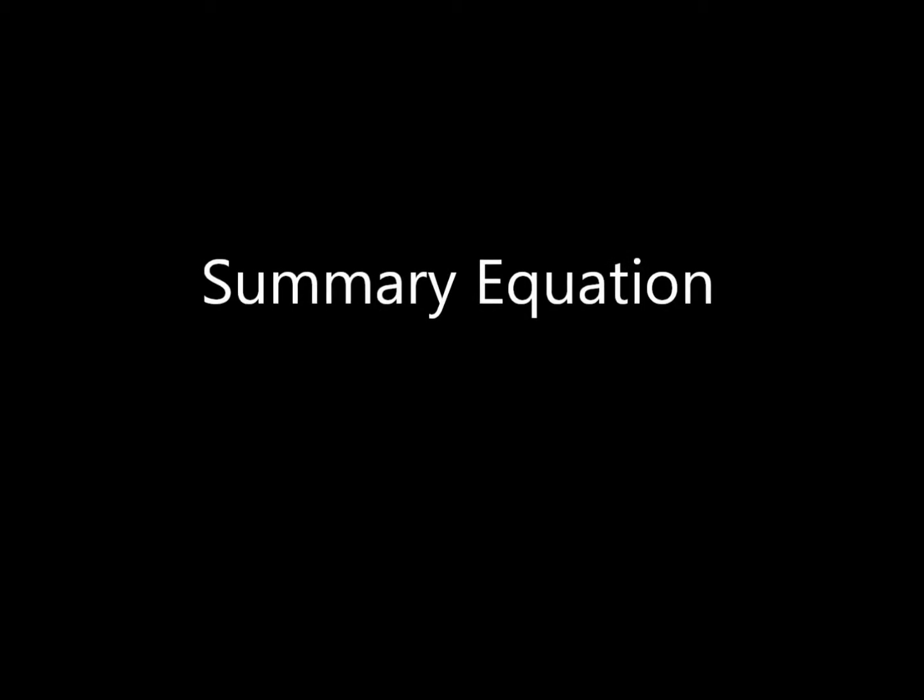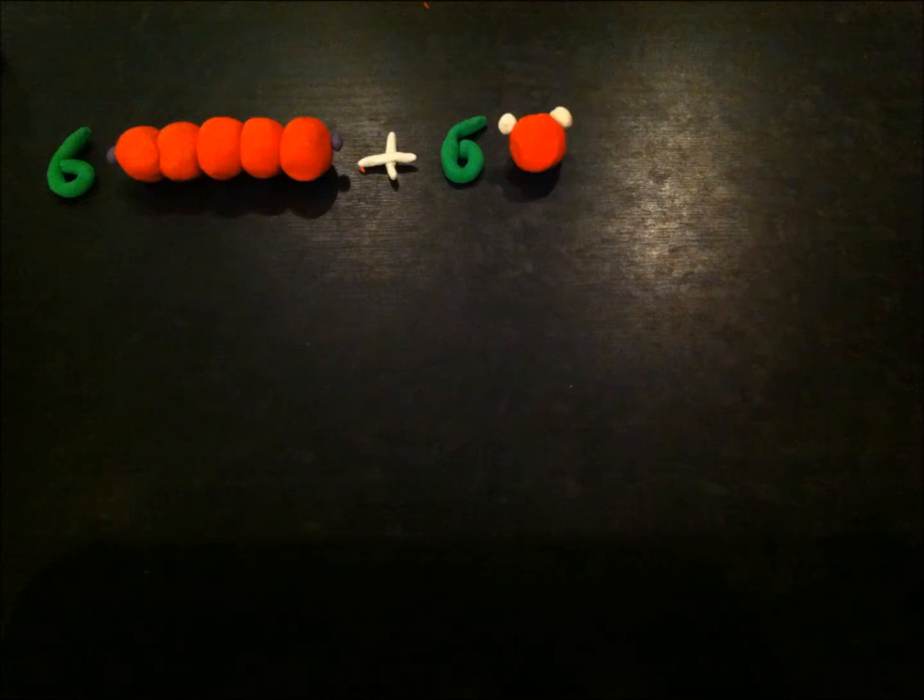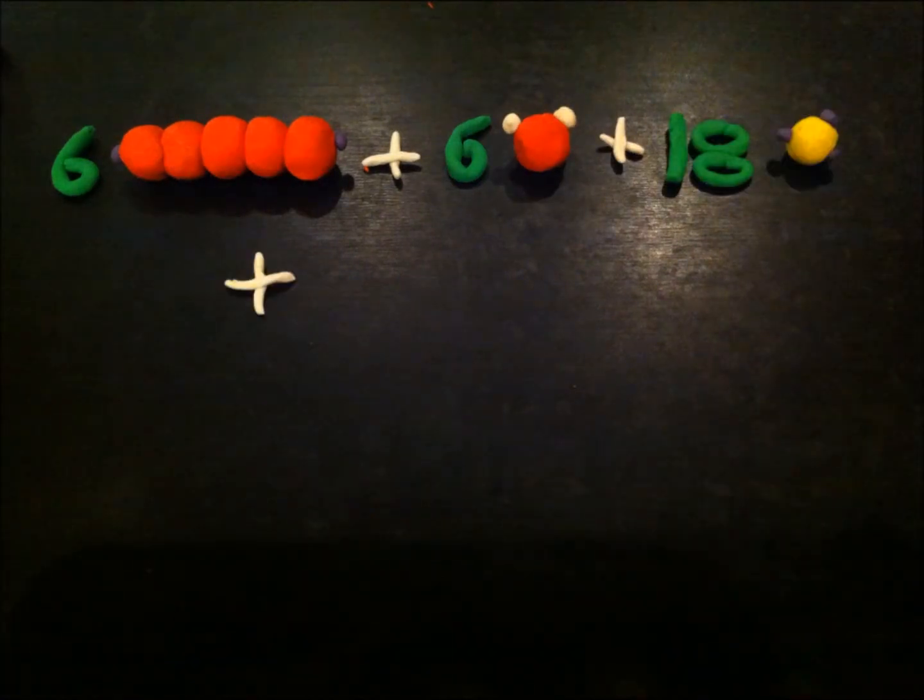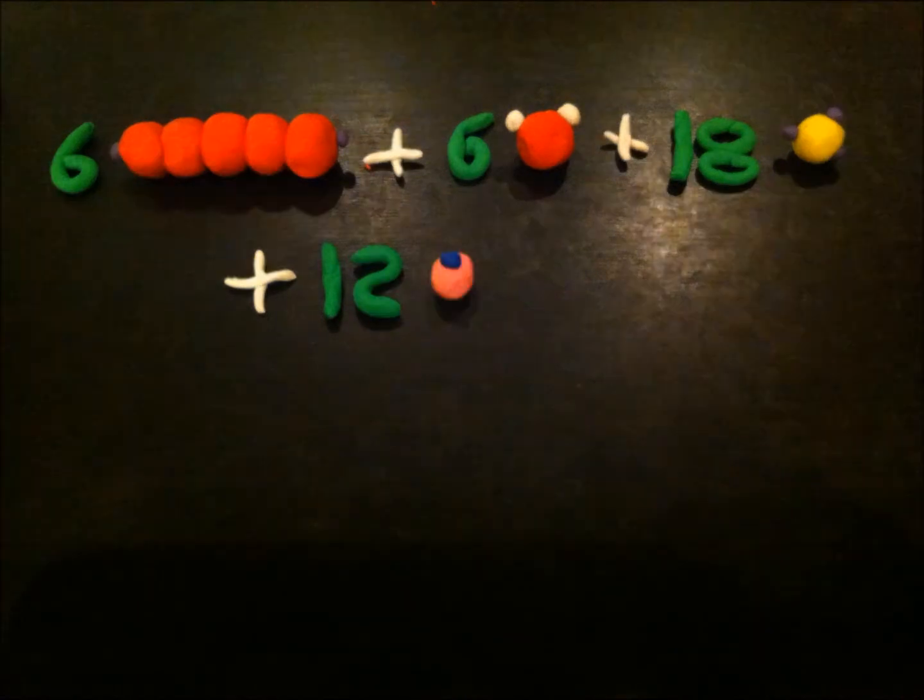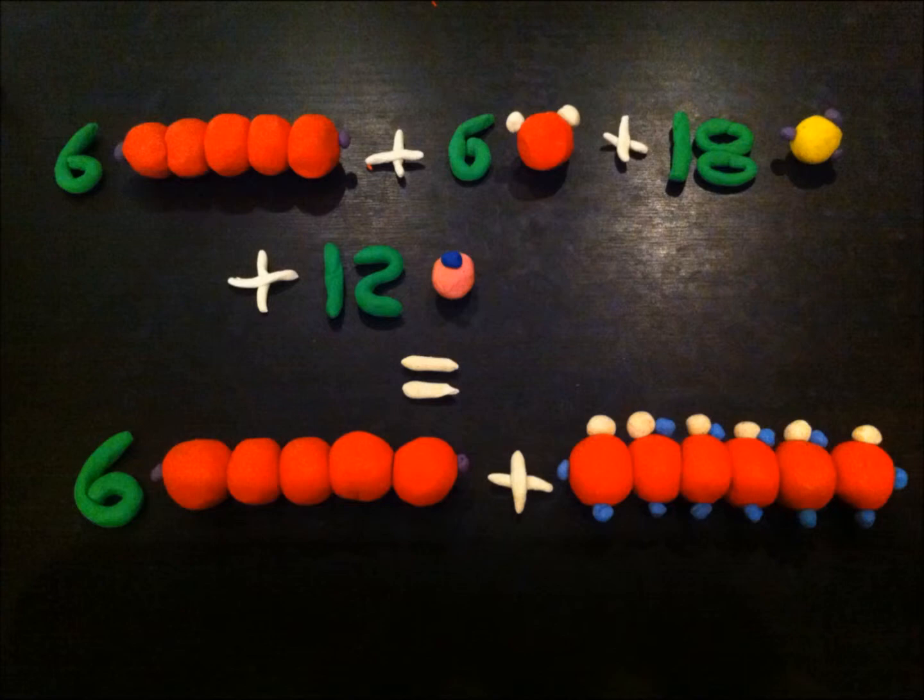This cycle occurs six times to create one glucose molecule from two G3Ps. Summary equation: 6 RuBP plus 6 CO2 plus 18 ATP plus 12 NADPH produces 6 RuBP and glucose. The glucose created is then used later in cellular respiration.